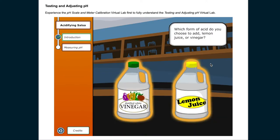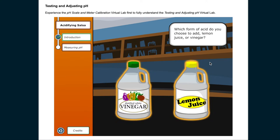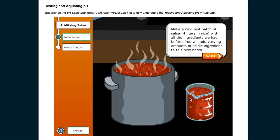Which form of acid do you choose to add? Lemon juice or vinegar? Make a new test batch of salsa, 4 liters in size, with all the ingredients we had before. You'll add varying amounts of acidic ingredient to this new batch.